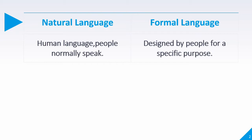Natural language is evolving over time, and formal language is also evolving over time. In natural language we have a lot of words, sentences, and grammar. In the case of formal language, we have what is called mainly a keyword, then we have functions, procedures, and grammar.